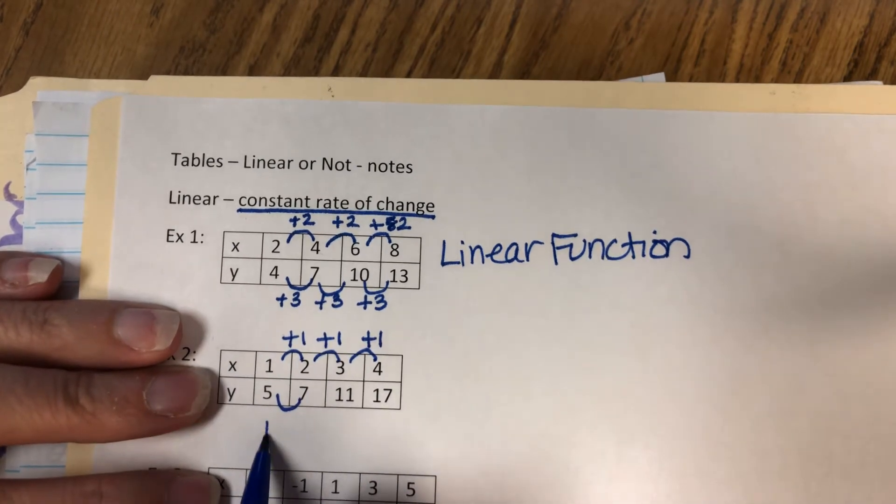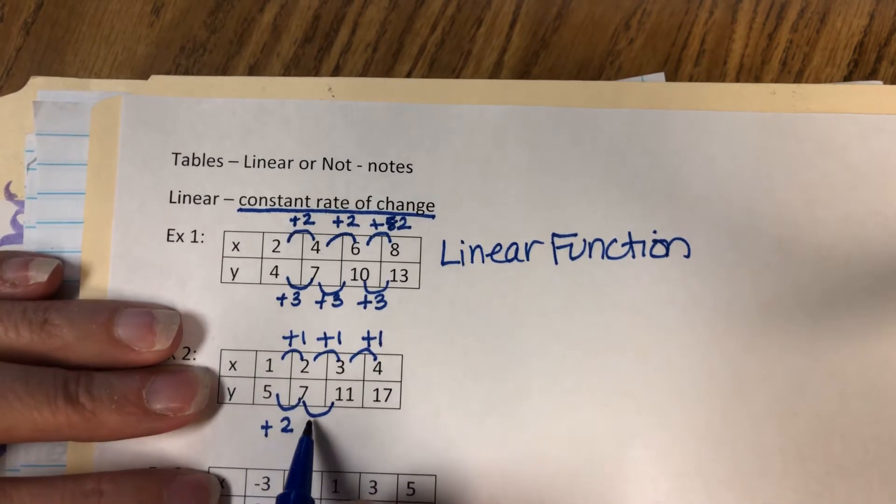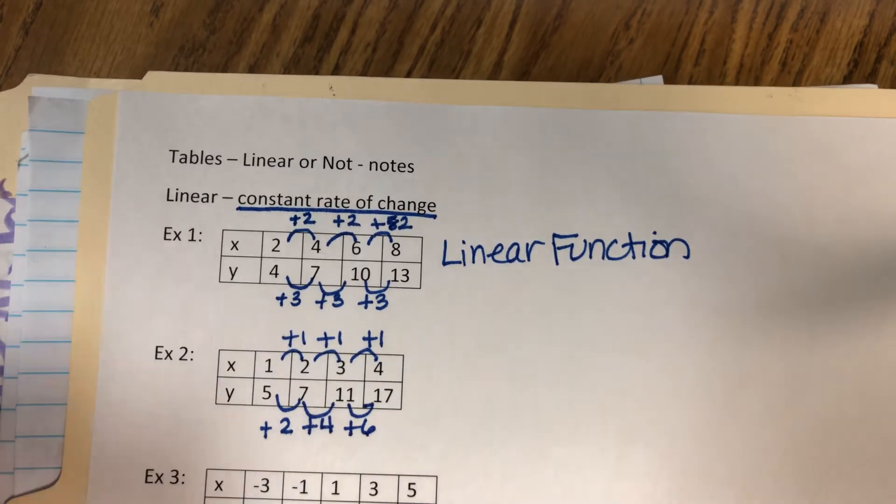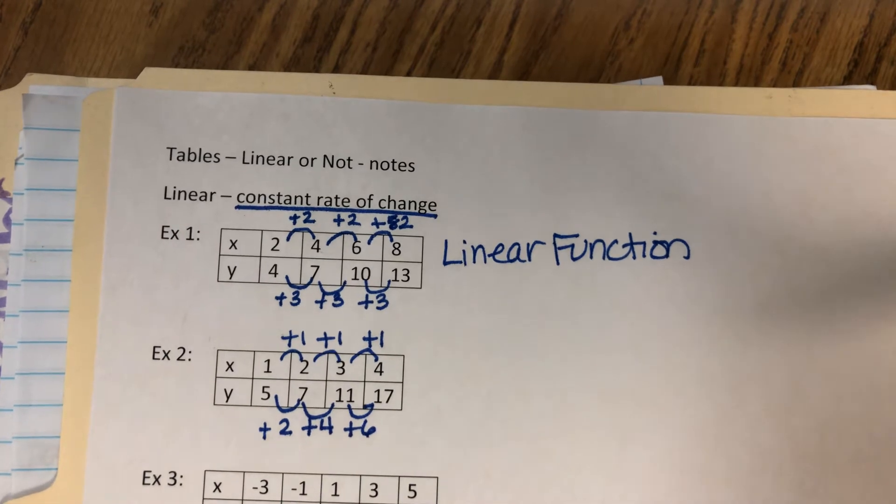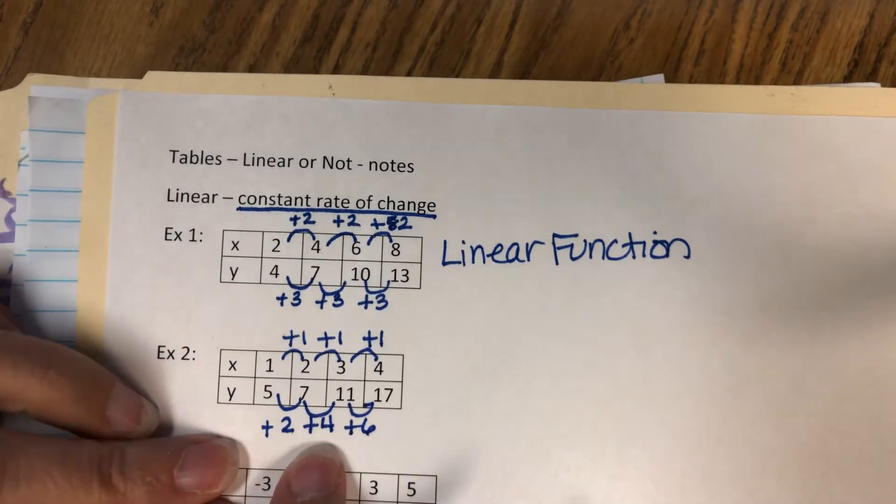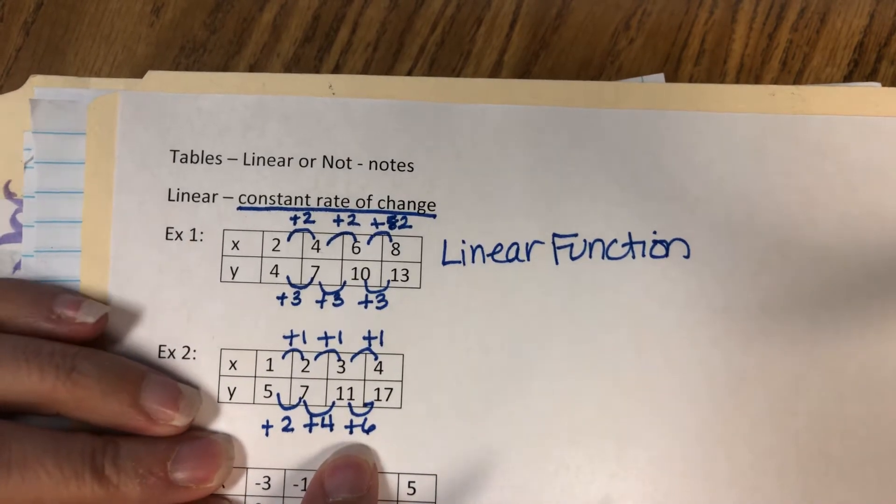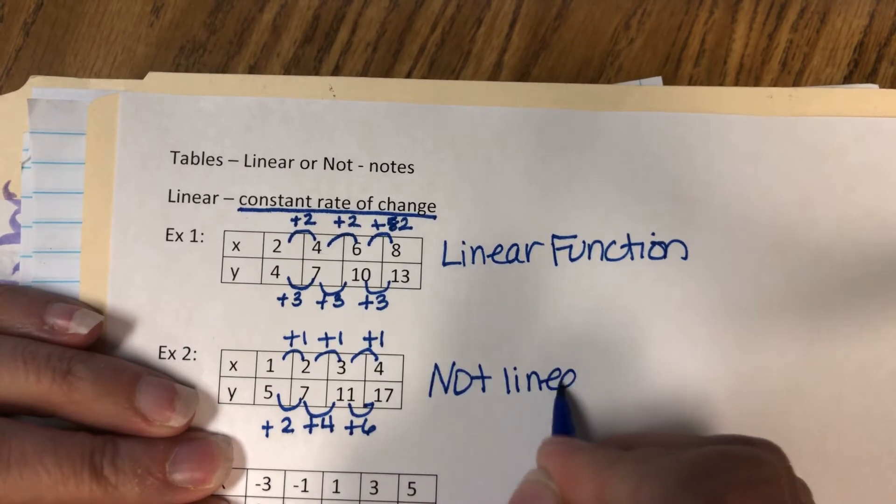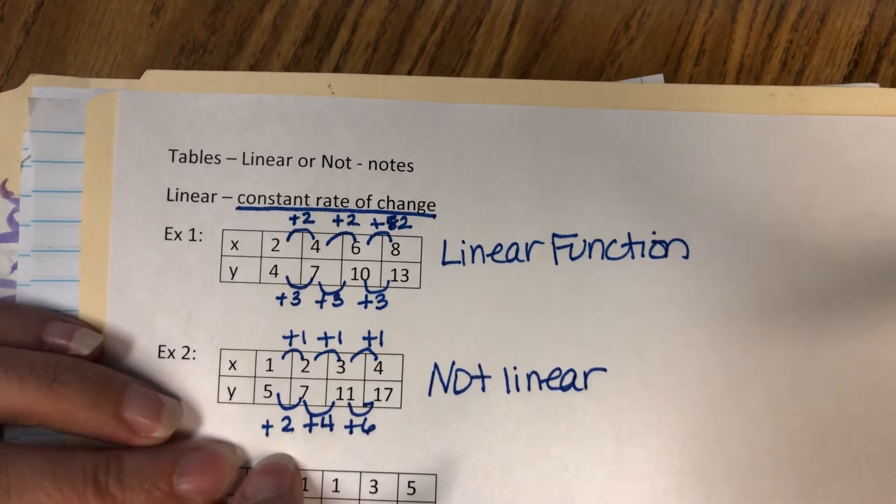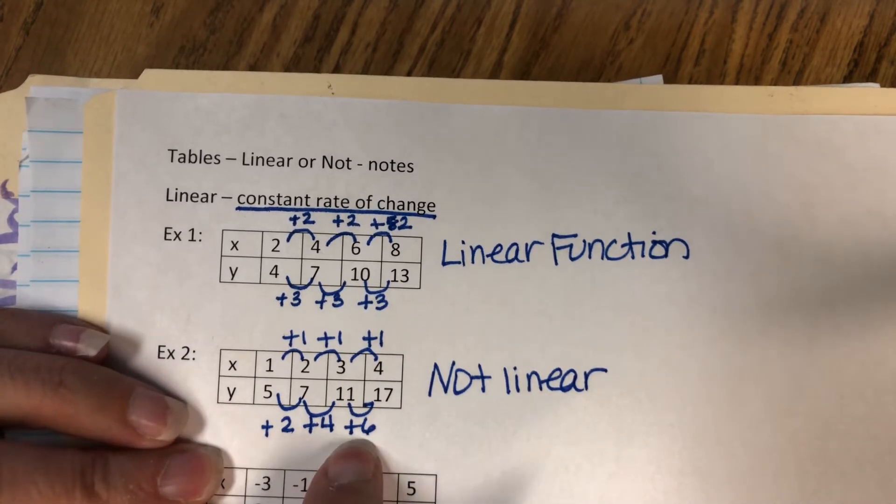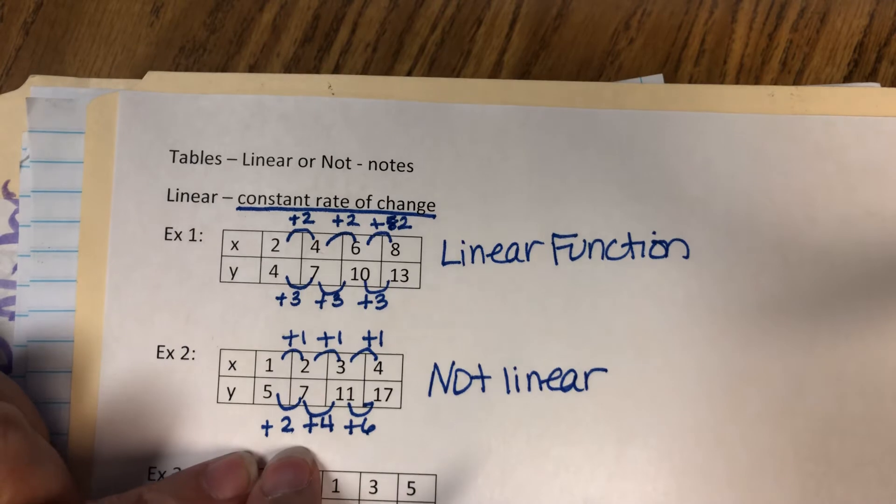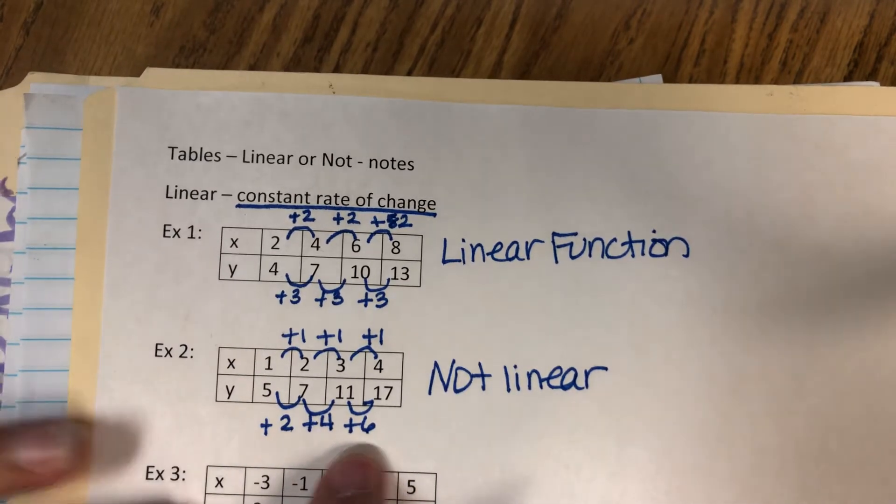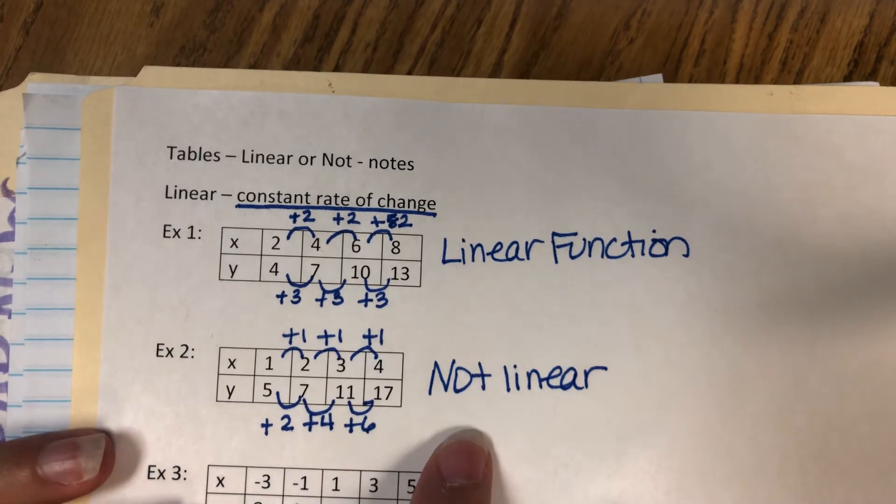Now, 5 to 7, you add 2. 7 to 11, you add 4. 11 to 17, you add 6. In order for it to be linear, you have to be adding or subtracting the same number. So this is not linear because that is not a constant rate of change. Constant means it would have to add 2 every time, or add 4 every time, or add 6 every time. Because it's adding different amounts, it is not linear.